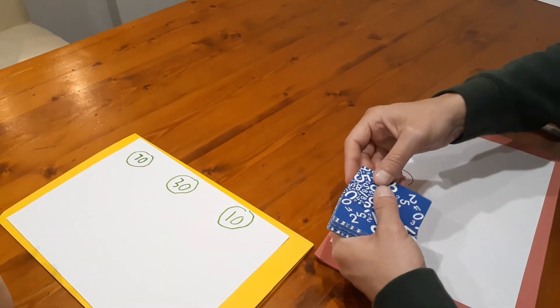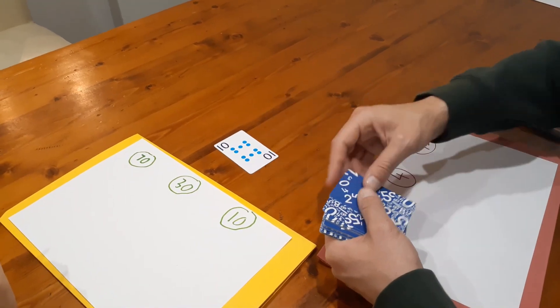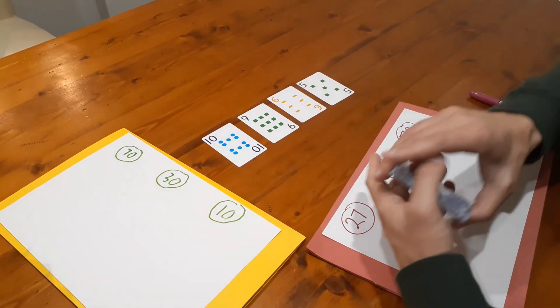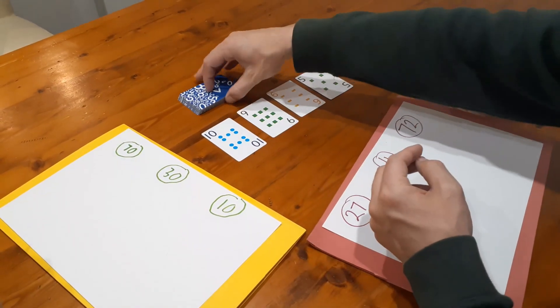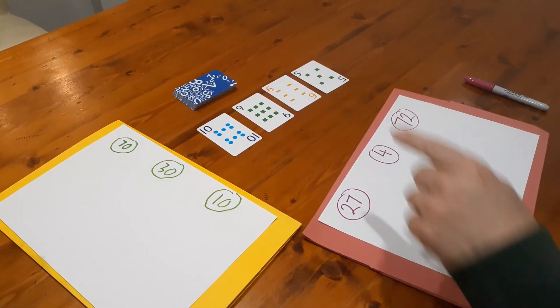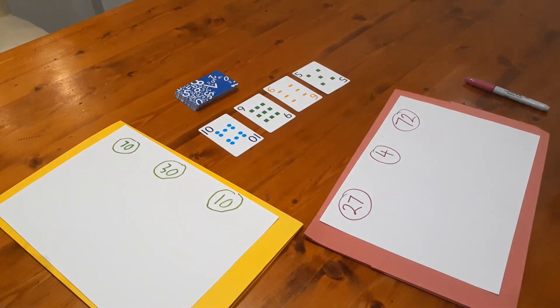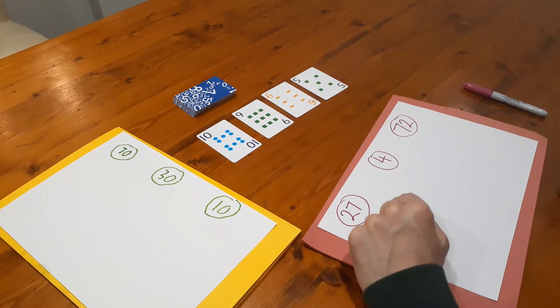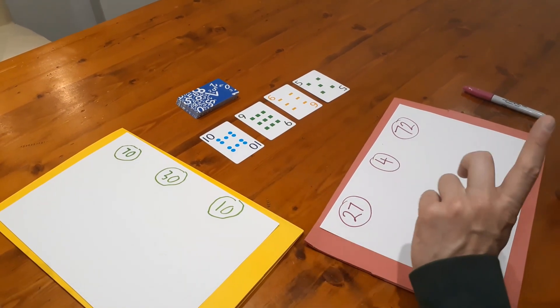Okay now to start off playing the actual game you need to turn over four cards and then you're going to take it in turns. Nasha you can choose if you want to go first or second and you're trying to give cards to the other player. So the winner of the game is going to be the person at the end with the fewest number of cards. Now Nasha do you want to go first or second?